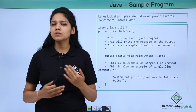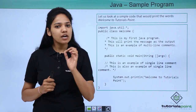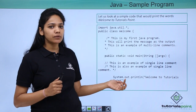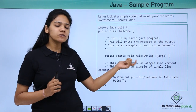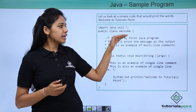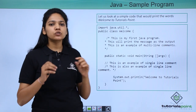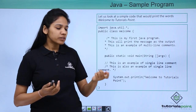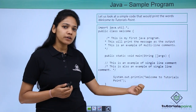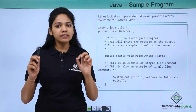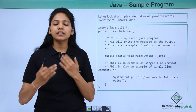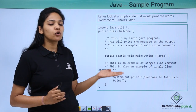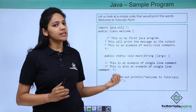What happens when you do not provide a main method — will the Java program execute? Yes, the Java program will certainly execute even without a main method. The compiler will compile the program, but the interpreter will not interpret it unless it finds the main method. Our main purpose here is to print a simple message called Welcome to Tutorials Point. Any statement that you want your program to execute must end with a semicolon, otherwise it will throw an error.